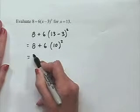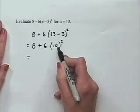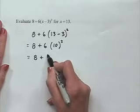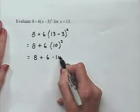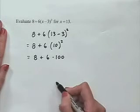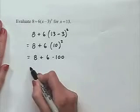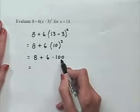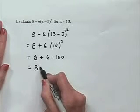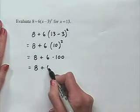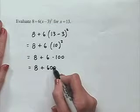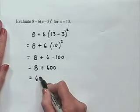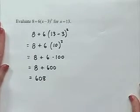We know to apply the exponent power next. 8 plus 6 times 10 squared, which is 100. We now apply the multiplication to give us 600, and then the addition to give us our answer of 608.